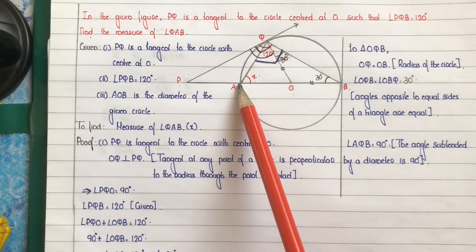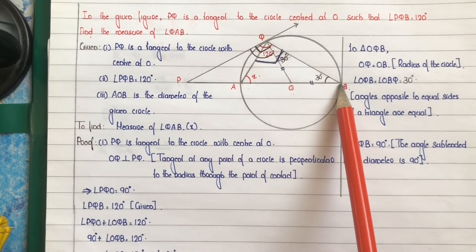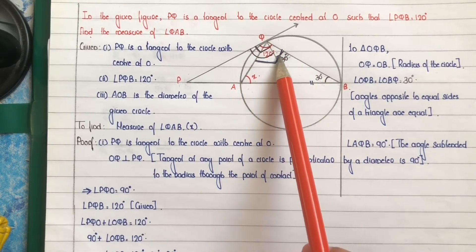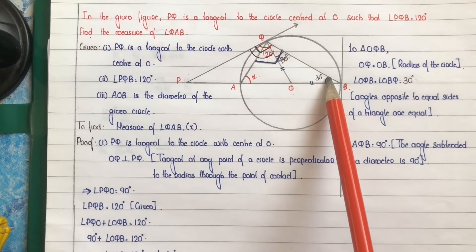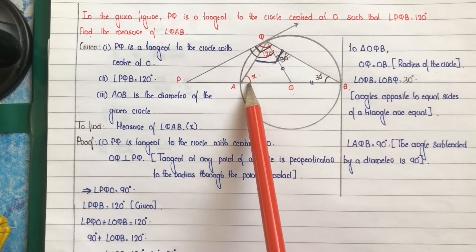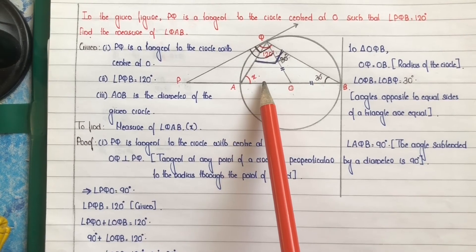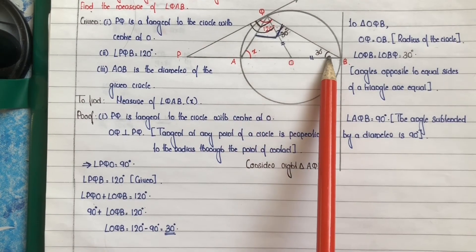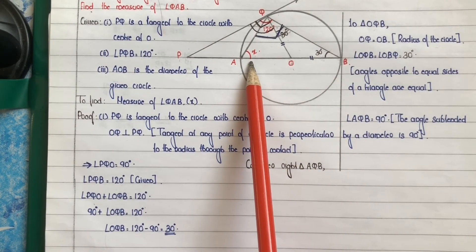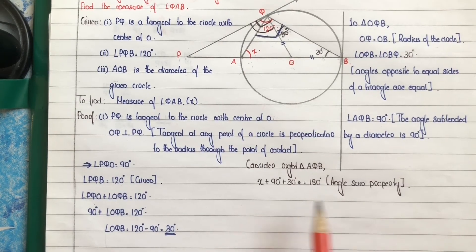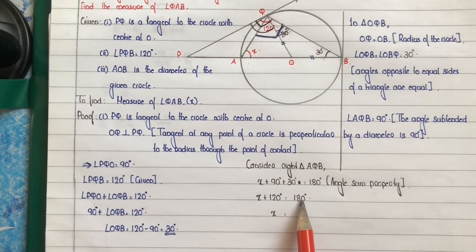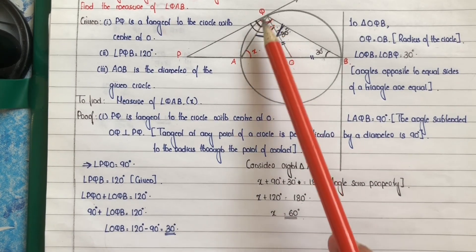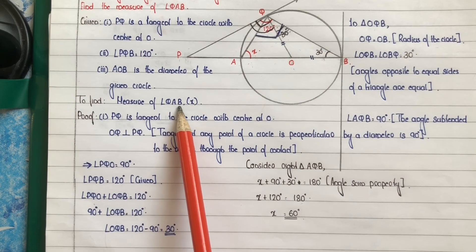In right triangle AQB, by the angle sum property: 90 degrees plus 30 degrees plus angle X equals 180 degrees. Therefore X equals 180 minus 120, which equals 60 degrees. So the measure of angle QAB is equal to 60 degrees.